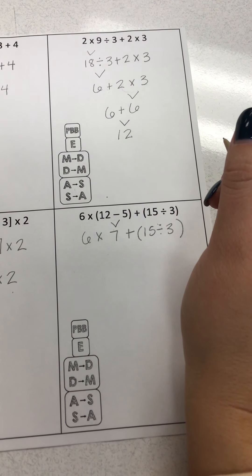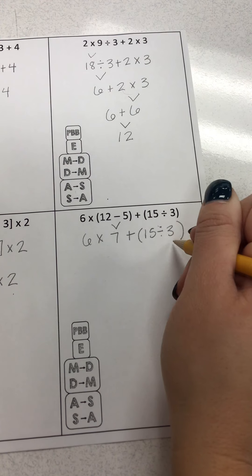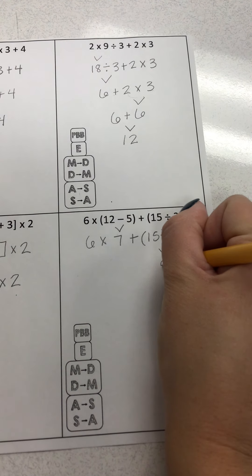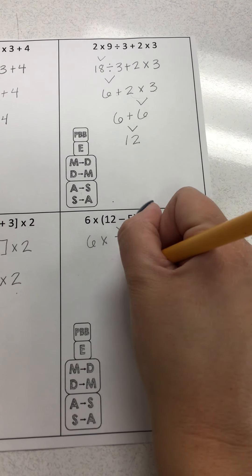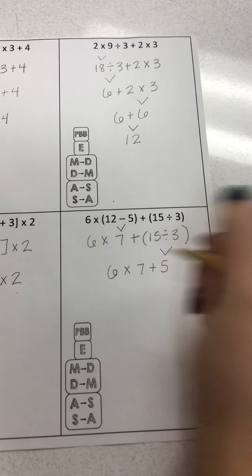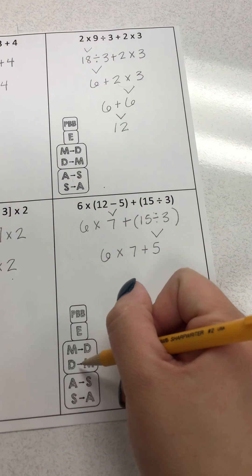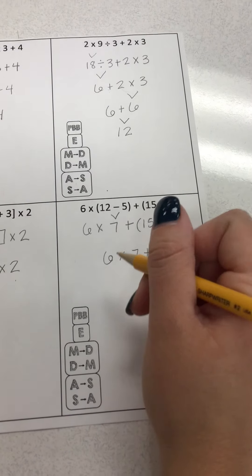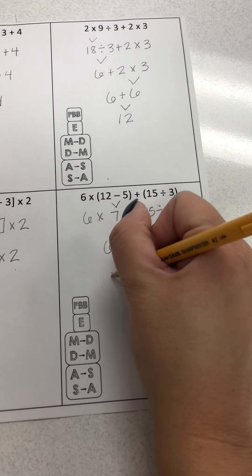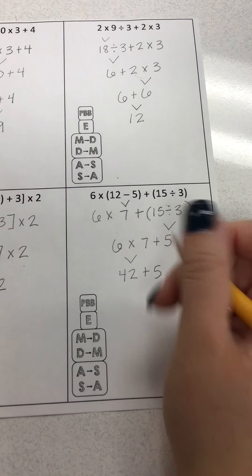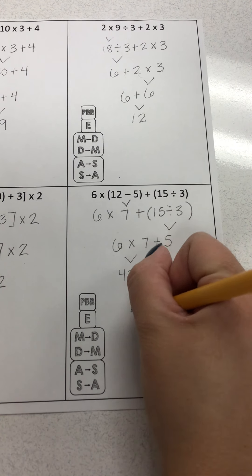Now I have to complete my other set of parentheses before I can do anything else. 15 divided by 3 is 5. Bring down the 7. Bring down the 6. Now I multiply before I add. So 6 times 7 is 42. Bring down the plus 5. 42 plus 5 is 47.